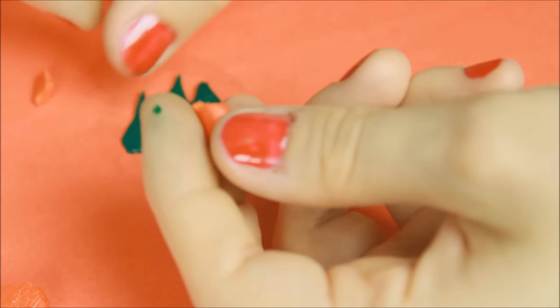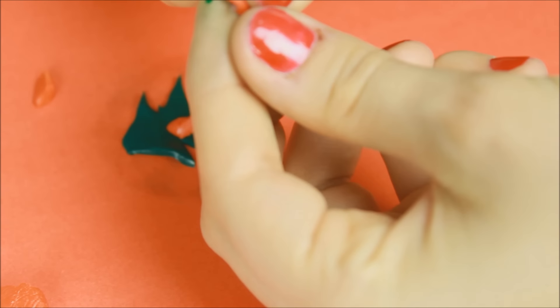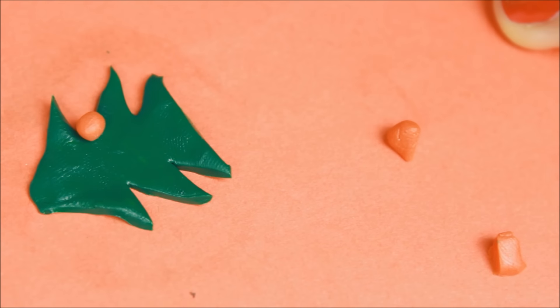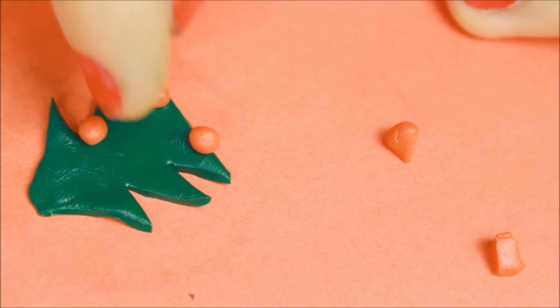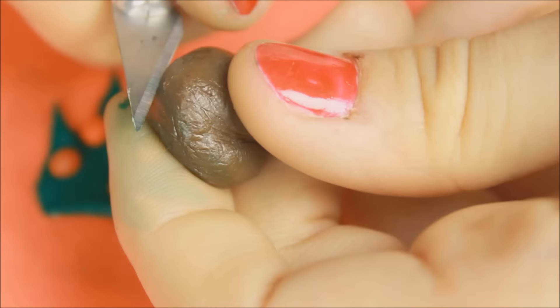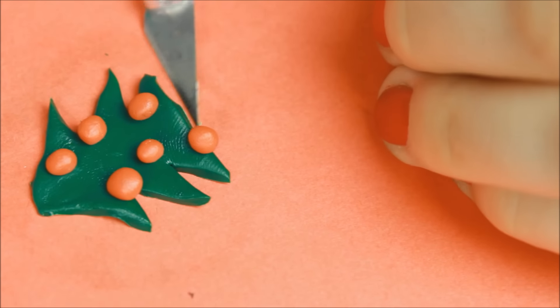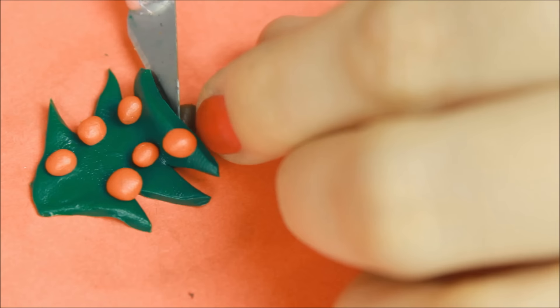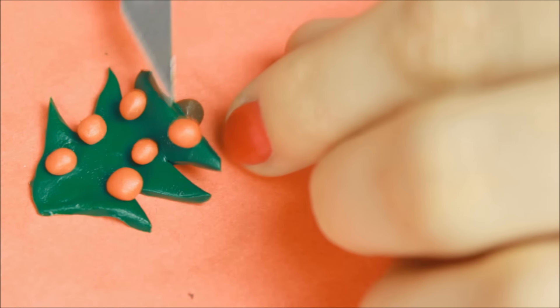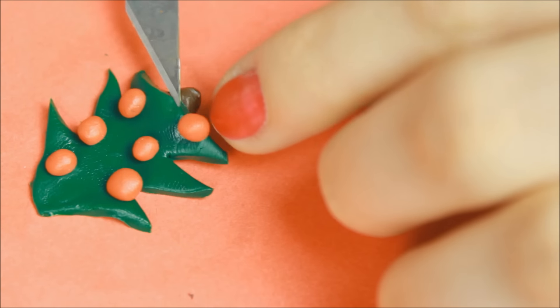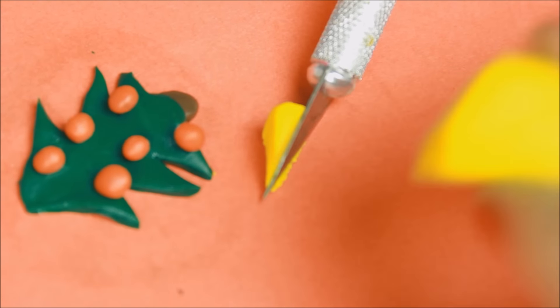Jetzt nehme ich mir die rote Farbe und schneide da erstmal ganz grob Stücke ab. Hier seht ihr, wie fest das da noch ist. Und in meiner Handfläche forme ich dann so kleine Kügelchen damit und platziere die auf dem Tannenbaum. Das sind dann sozusagen die Christbaumkugeln. Jetzt nehme ich noch ein bisschen von der braunen Farbe und schneide das ab. Diese eignet sich nämlich wunderbar als Stamm. Die kann man dann einfach so unter den Baum drunter legen und dann wieder platt drücken.